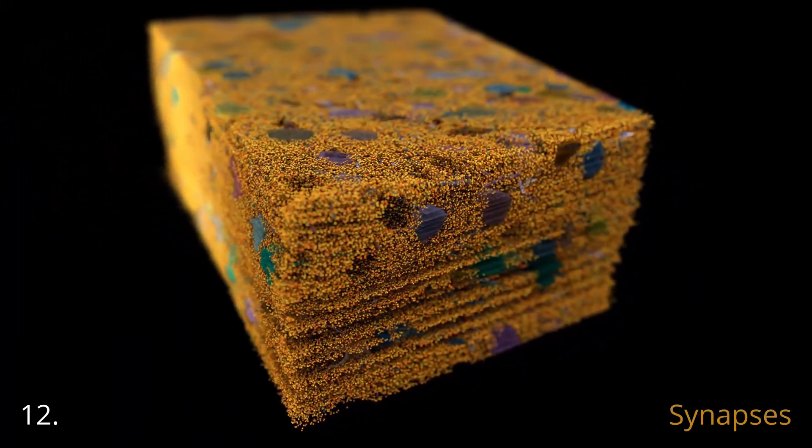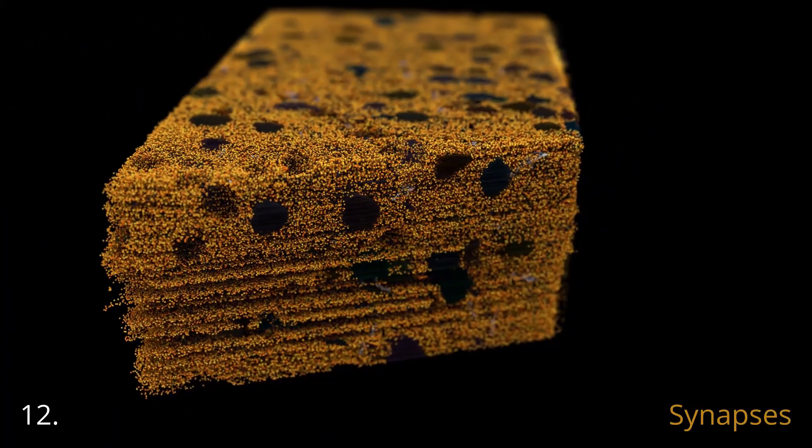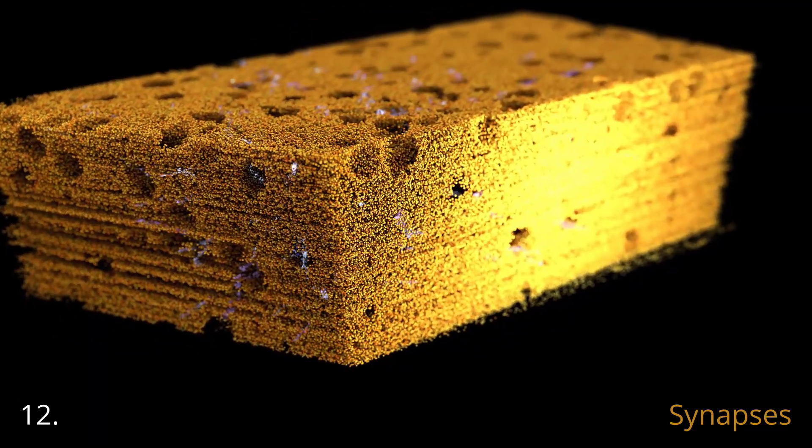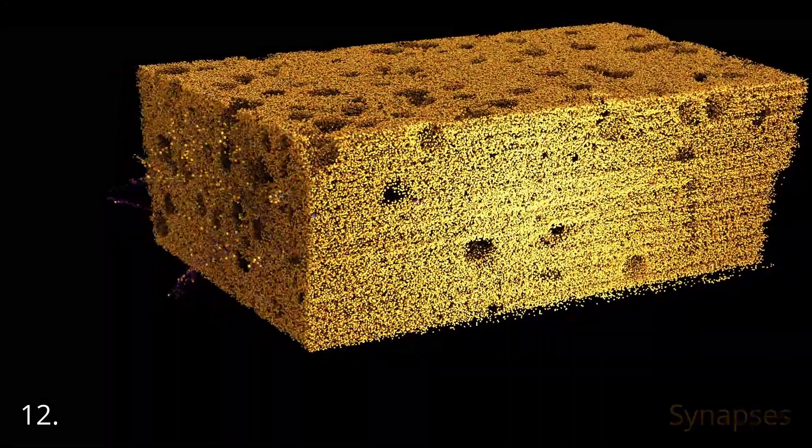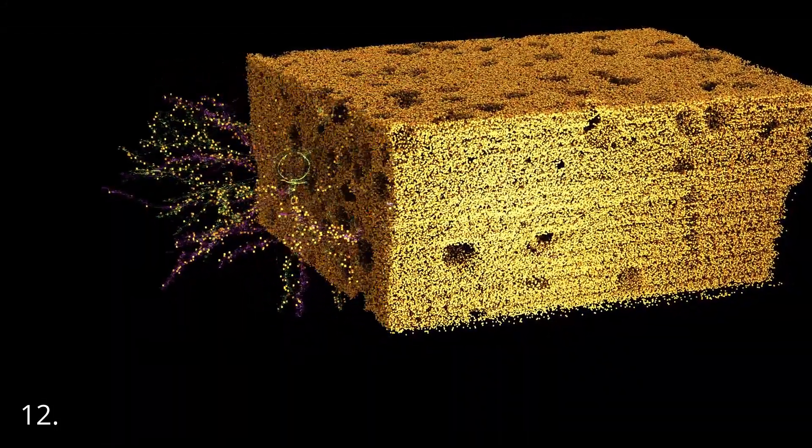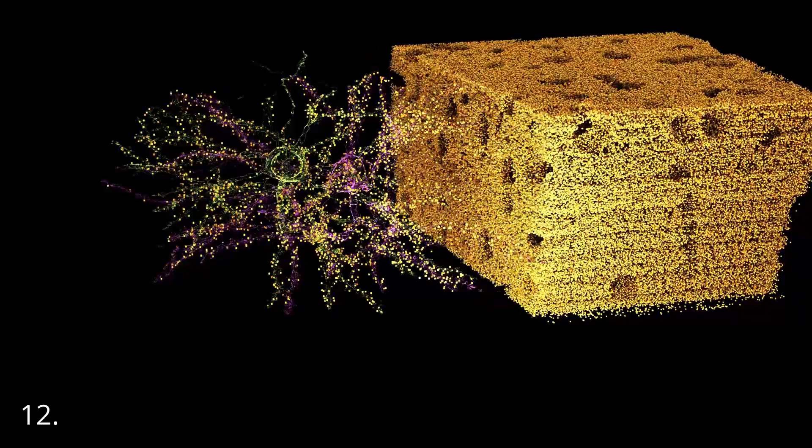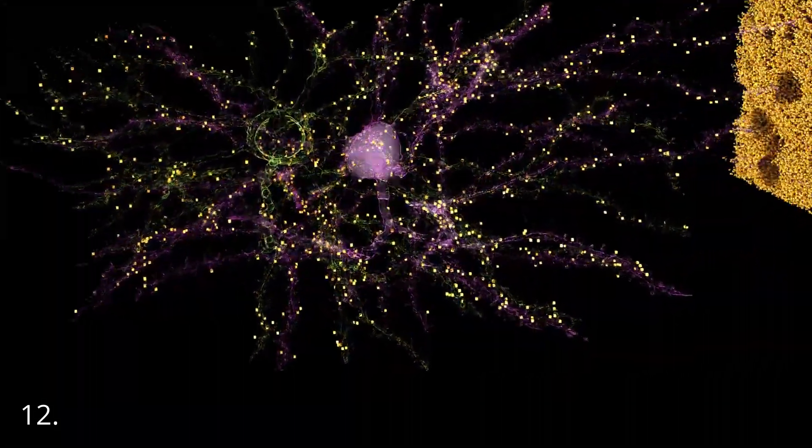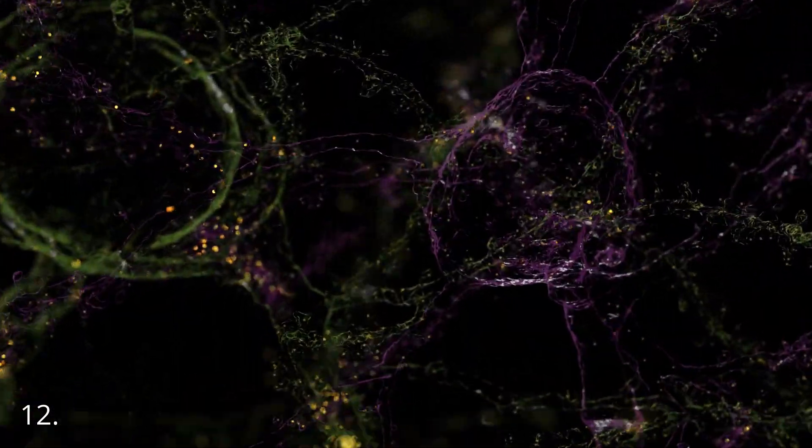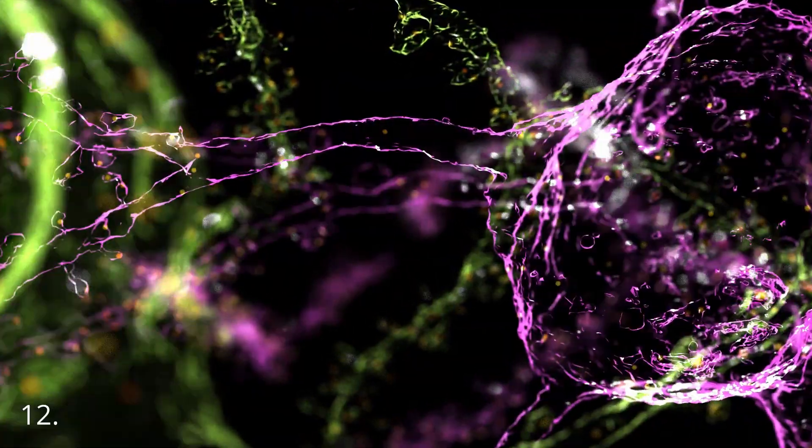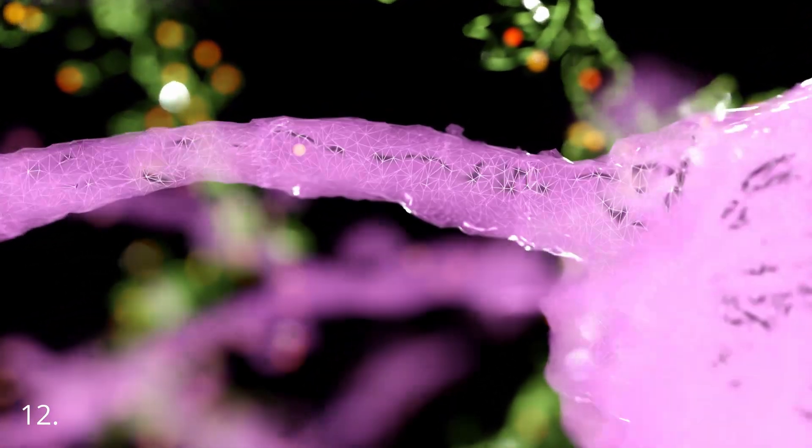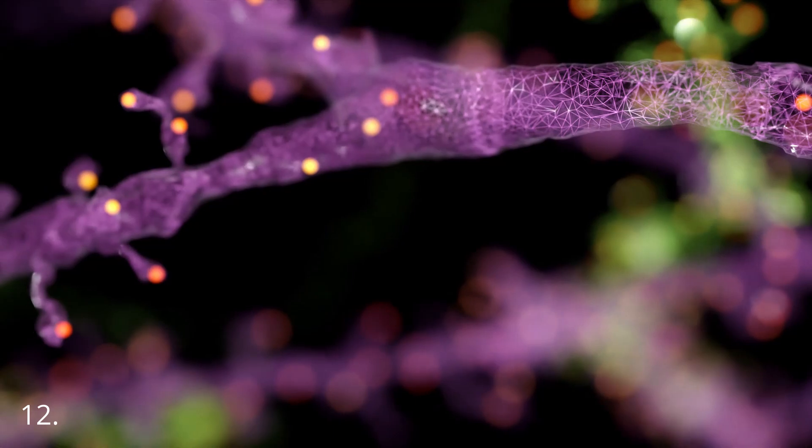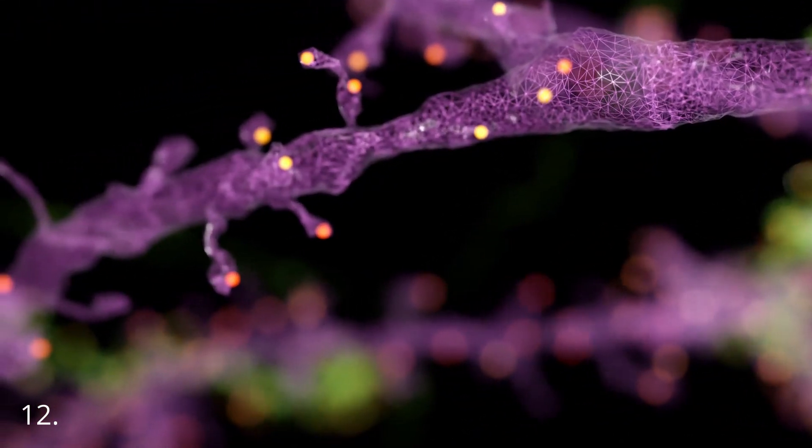Synapses aren't static. The strength of their connection changes dynamically with time and experience. This is the biological phenomenon which was the inspiration for how artificial neural networks update their weights during learning. Each neuron integrates a constellation of inputs and communicates with its partners by modulating its firing rate. Neurons excite or inhibit one another in a delicate exchange of signals over time scales, fast and slow, in the intricate dance of information flow.